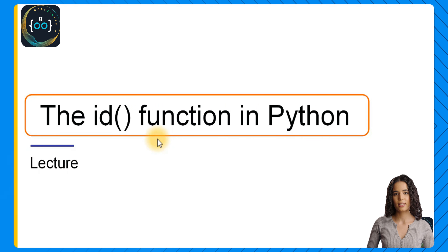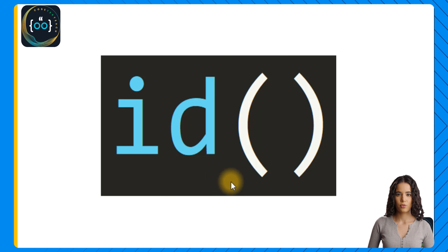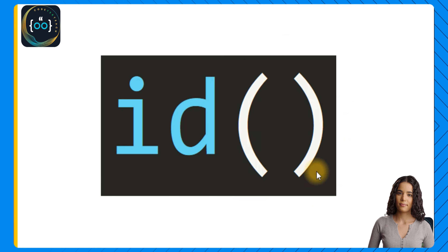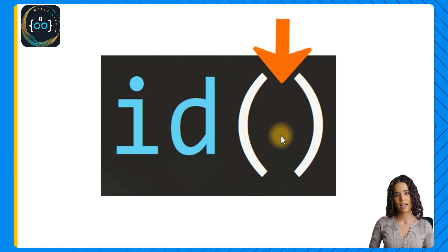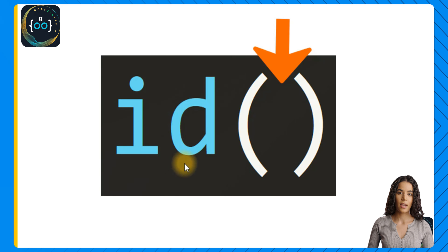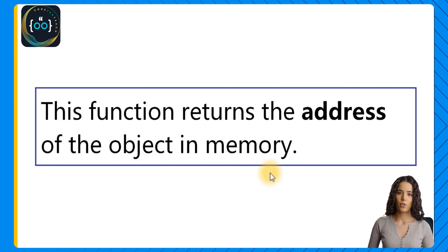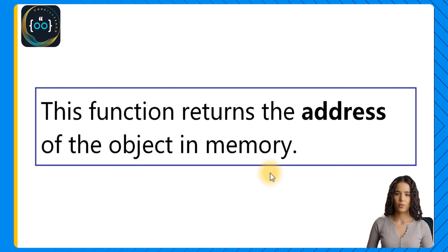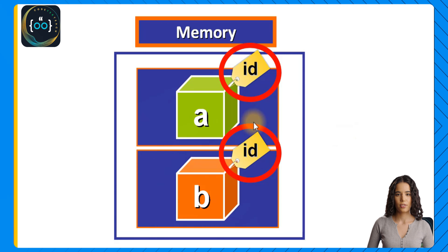Now you will learn about the ID function in Python and how it is related to the objects in your program. This is the ID function — ID followed by parentheses — and in those parentheses we write the variable that references the object for which we want to find the ID. This function returns the address of the object in memory. When we create an object, it is stored somewhere in memory at a specific memory location, and this function helps us know that address.